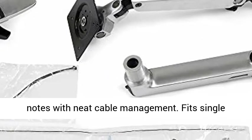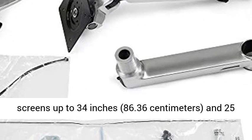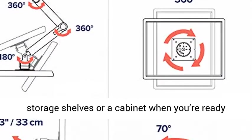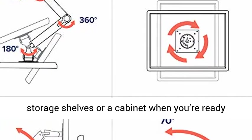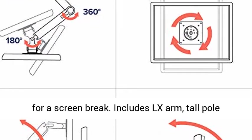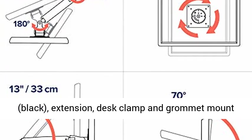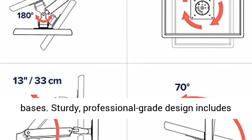Fits single screens up to 34 inches and 25 pounds. Folds to fit under storage shelves or a cabinet when you're ready for a screen break. Includes LX Arm, Tall Pole, Black, Extension, Desk Clamp and Grommet Mount Bases.